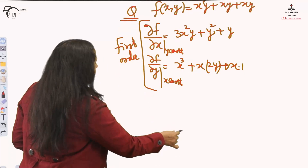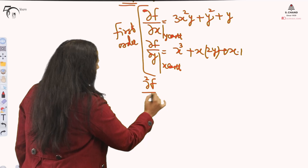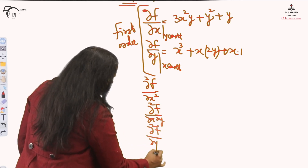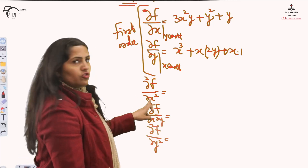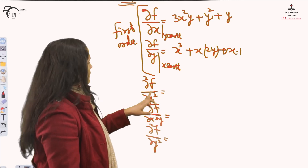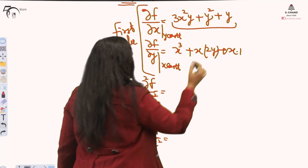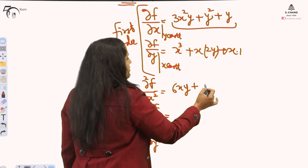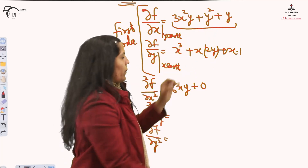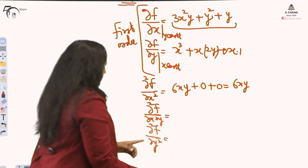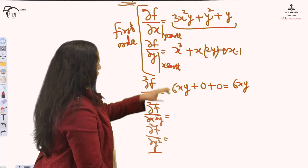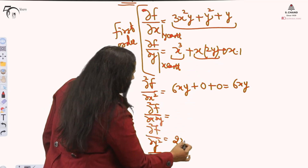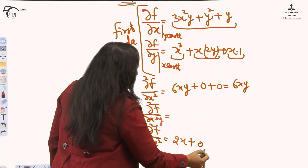Now let me explain how we find second-order partial derivatives. For second order, we have three options. To find del²f / del x², differentiate del f / del x again with respect to x keeping y constant: the derivative of 3x² gives 6xy (since 3 is already there), and the remaining terms vanish as constants, giving just 6xy. For del²f / del y², differentiate del f / del y again with respect to y: that gives 2x (since the derivative of y is 1) and the other term vanishes, giving just 2x.